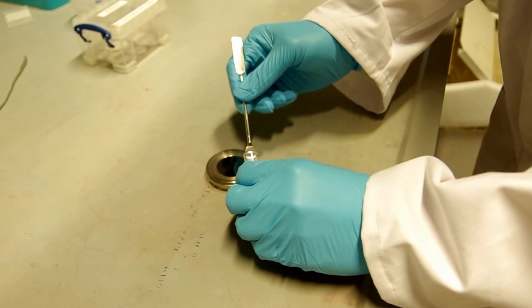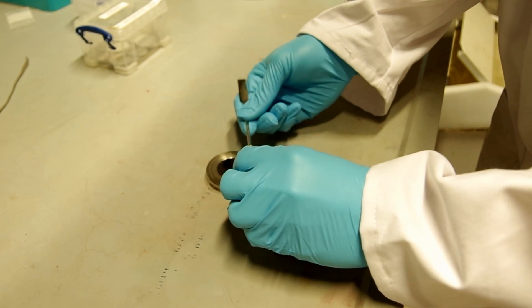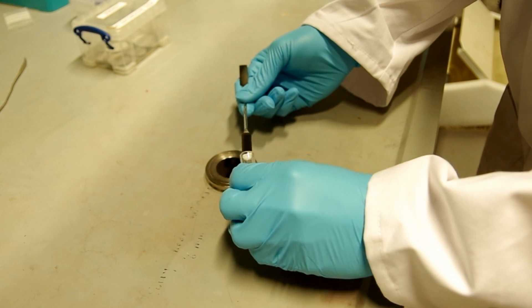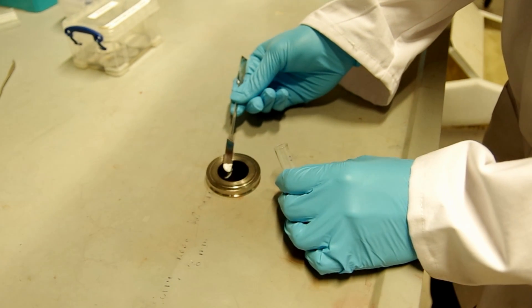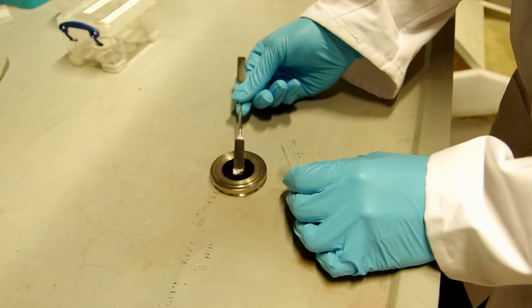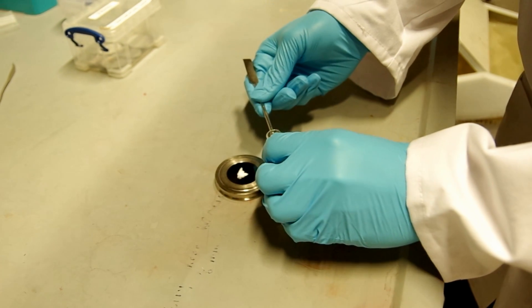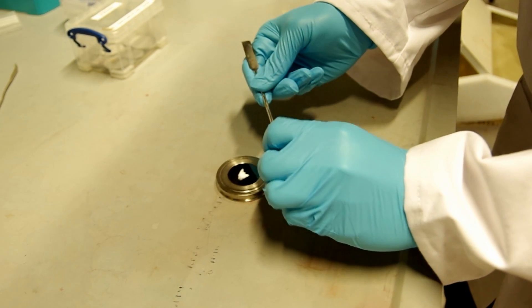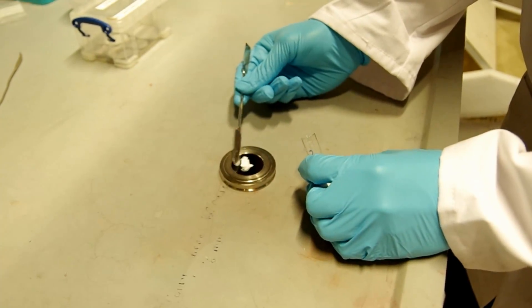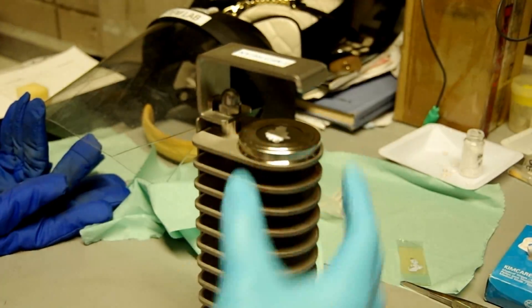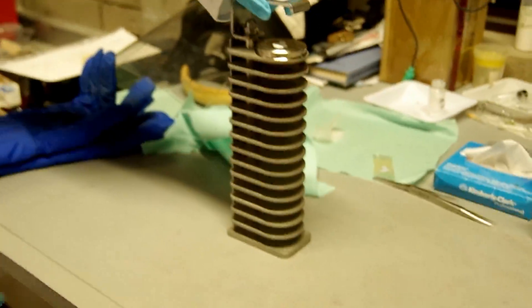Use the spatula to take up the sample powder and flatten it on the front of the silicon background. The sample specimen is then put on the sample holder.